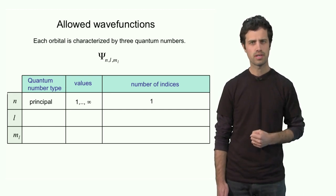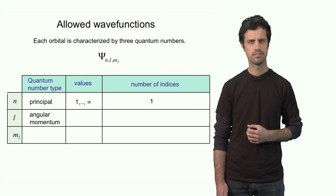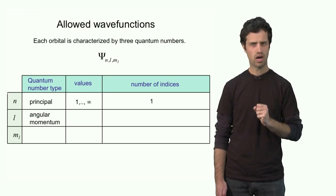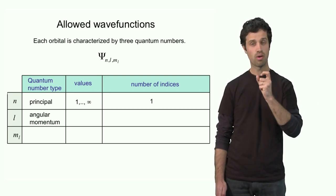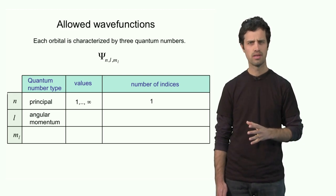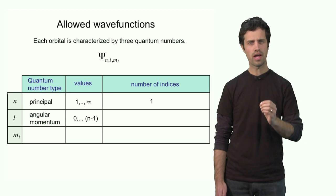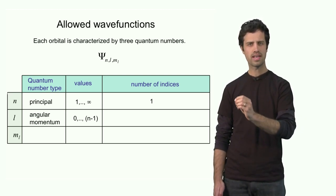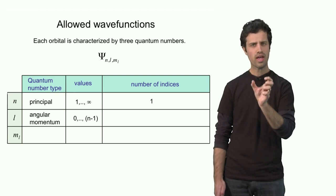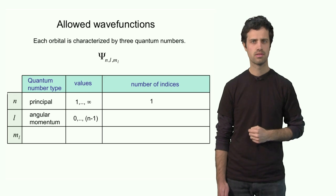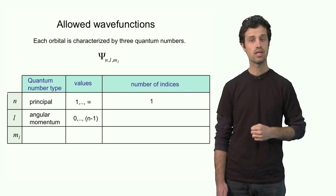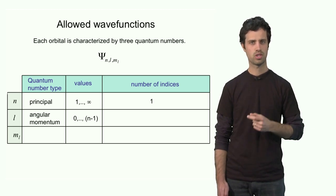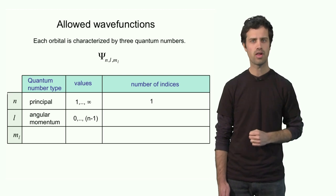The second quantum number is called the orbital angular momentum, l. Unlike n, the values of l are restricted by whatever n is. The allowed values for l are 0 in integer steps up to n-1. For instance, if n equals 2, the allowed values for l are 0 and 1, because n-1 equals 1, which is the maximum value of l.